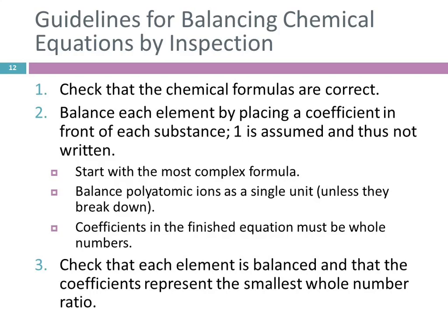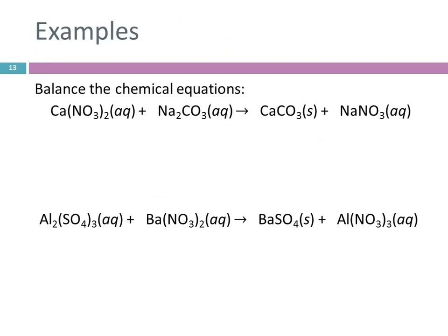And also make sure that the coefficients represent the smallest whole number ratio. So if you ended up with coefficients that were 2A plus 4C goes to 2B, are those the smallest coefficients that you could use? No. We could divide all of them by 2, and we could get 1A plus 2C goes to 1B. So if you end up with coefficients that have a common factor, you need to clear that out. So let's do something. We're going to balance these chemical equations.